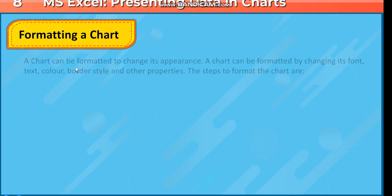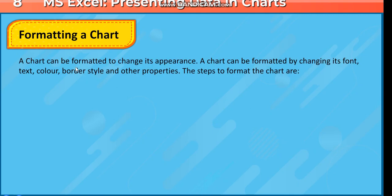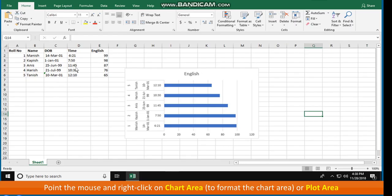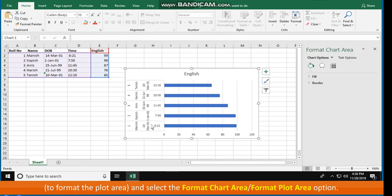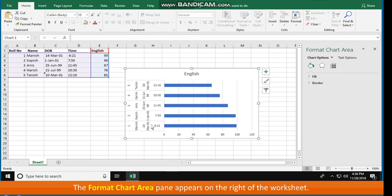Formatting a Chart. A chart can be formatted to change its appearance, by changing its font, text, color, border style, and other properties. The steps to format the chart are: point the mouse and right-click on Chart Area to format the chart area, or on Plot Area to format the plot area, and select the Format Chart Area or Format Plot Area option. For example, click on Format Chart Area. The Format Chart Area pane appears on the right of the worksheet.